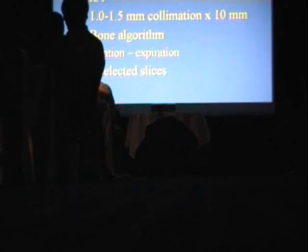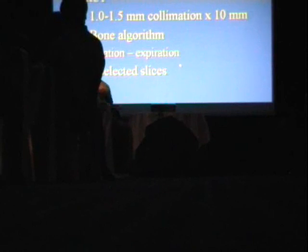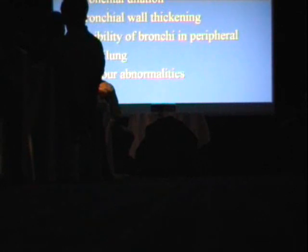With multi-detector CT, most of you can reconstruct thin slices retroactively, and 2.5 mm is probably sufficient for diagnosing bronchiectasis. It may be difficult to find bronchiectasis on 7 to 10 mm thick slices. It's important to also do expiration CT — we tend to do six selected slices distributed evenly from apex to base — to demonstrate air trapping. Expiration views can be really helpful to show air trapping, so whenever thinking about airway disease, whether bronchiectasis or small airway disease, get expiration views.